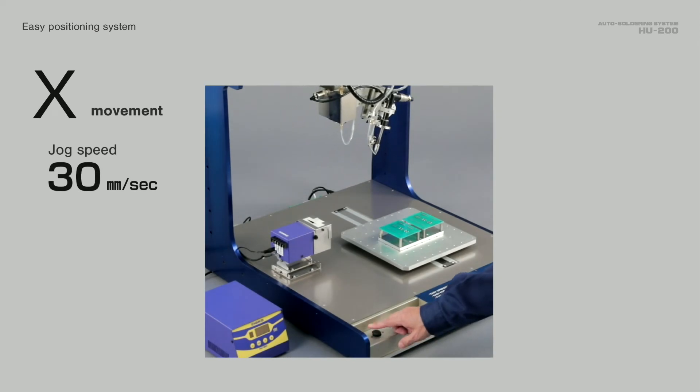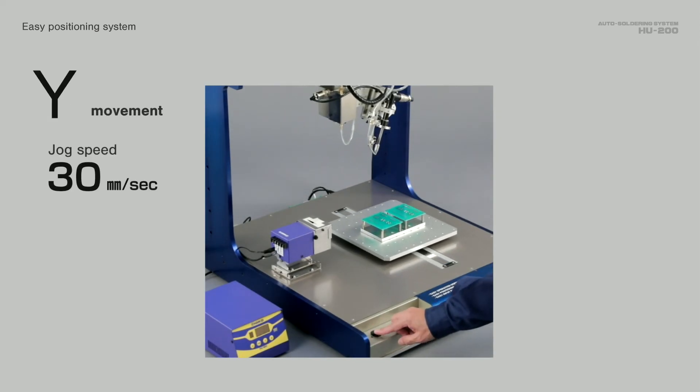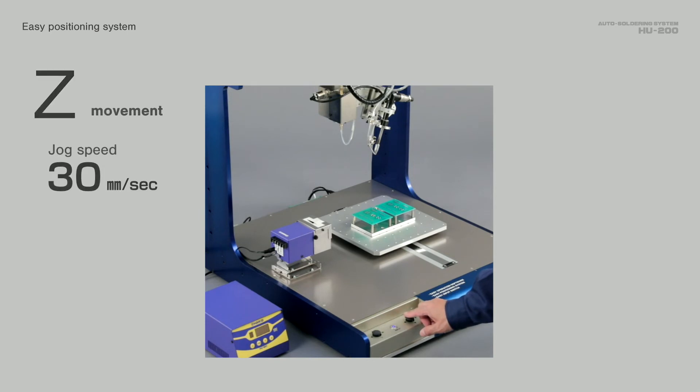The left joystick is for travel of the X- and Y-axis and the right one is for the travel of the Z- and Theta-axis.